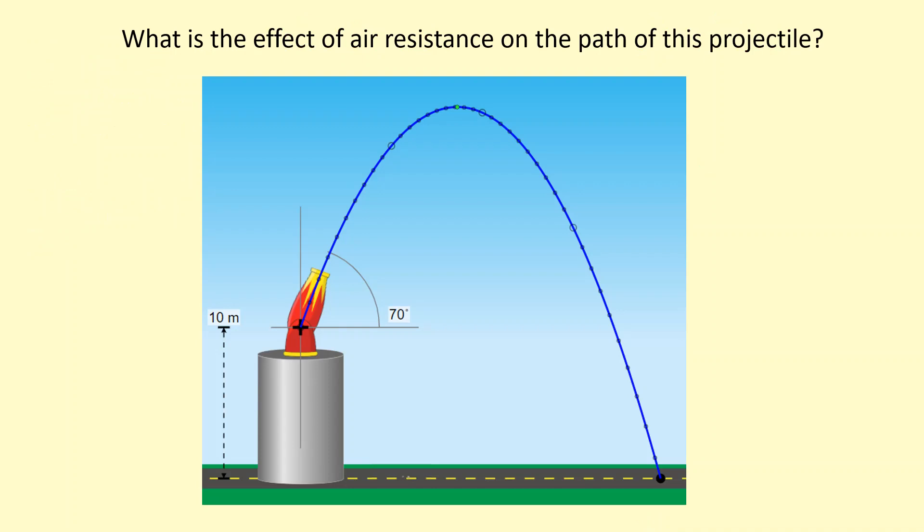In this question, you have a projectile being fired at an angle. And the question is, what is the effect of air resistance on the path of this projectile? First, the air resistance will always act in the opposite direction to the motion. So in this case, it'll be like this direction.